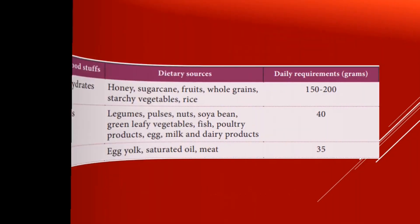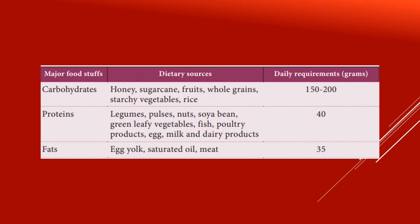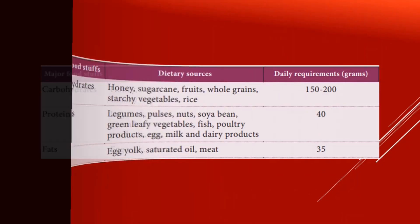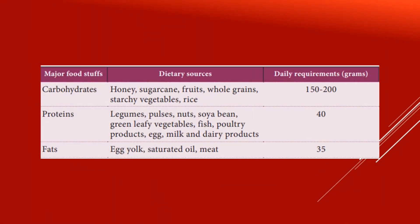Proteins can be obtained from legumes, pulses, nuts, soybeans, green leaves, vegetables, fish, poultry products, eggs, milk, and dairy products. The daily requirement is 40 grams for a normal human body. Fats can be obtained from egg yolk, saturated oils, and meat. The daily requirement for fats is 35 grams per day for a normal human body.